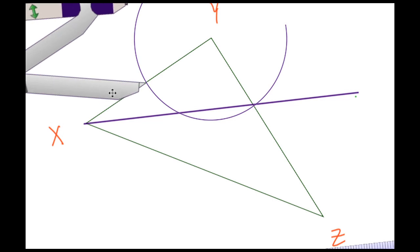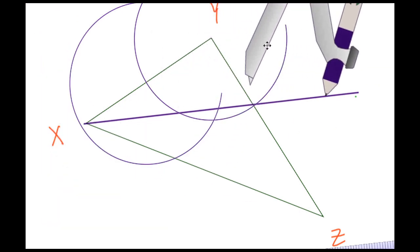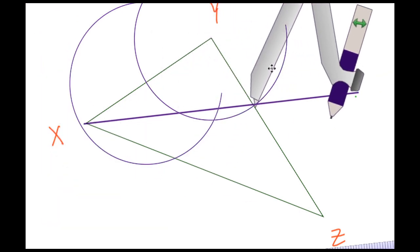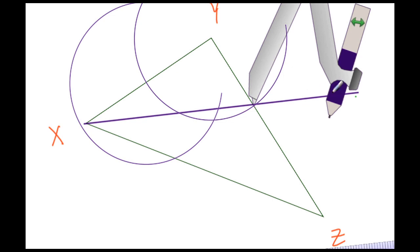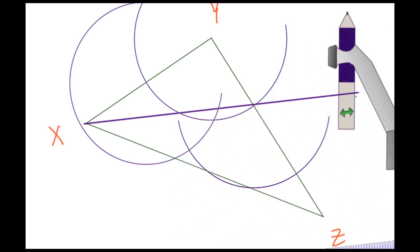Then do the same thing from this intersection here on the right-hand side. Again, I'm looking to see where they intersect, and I have my intersection here.